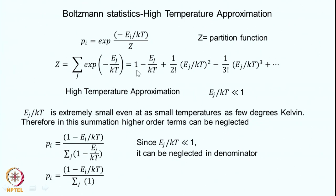The magnetic moments for nuclei are so small that the interaction energy is extremely small compared to kT. So in the Taylor expansion, the higher order terms do not contribute much at all. This is called the high temperature approximation: E_j over kT is far less than 1, and therefore one can neglect the higher order terms in the expansion for Z. The probability that the spin is in state i with energy E_i is then given by 1 minus E_i over kT, divided by the summation of 1 minus E_j over kT.